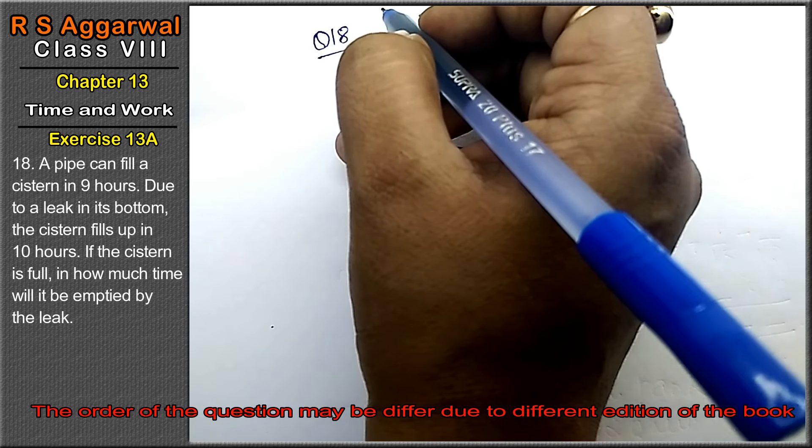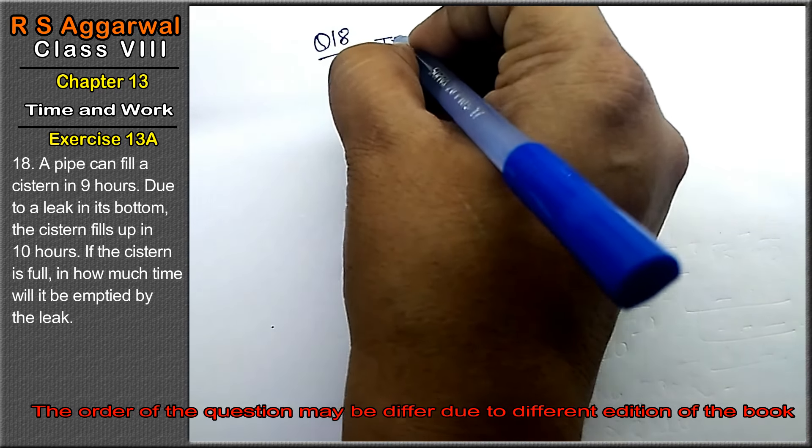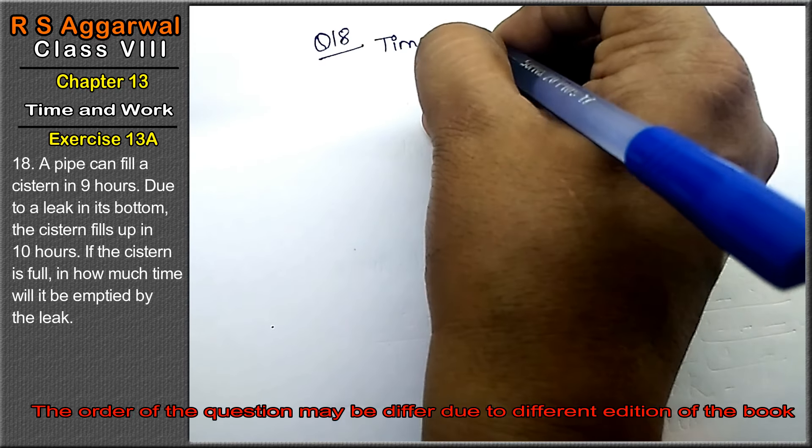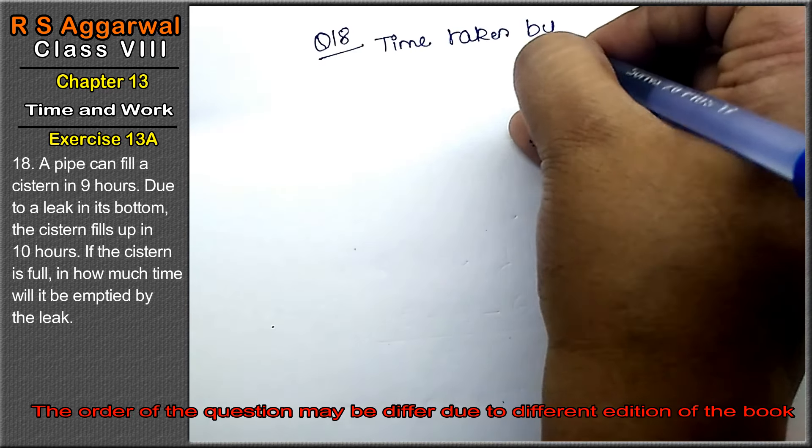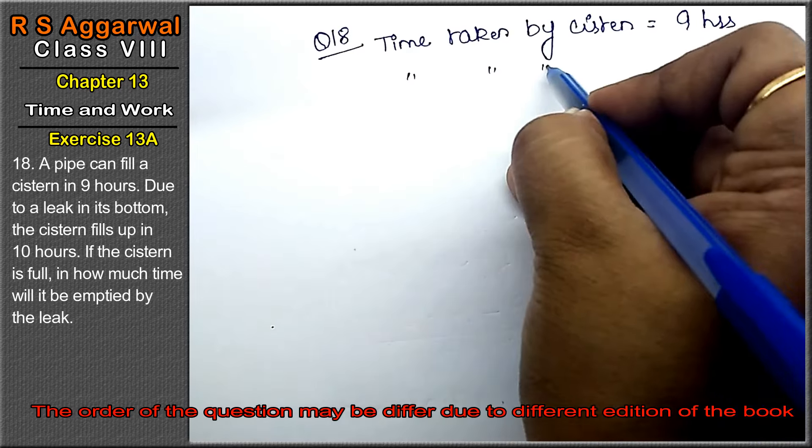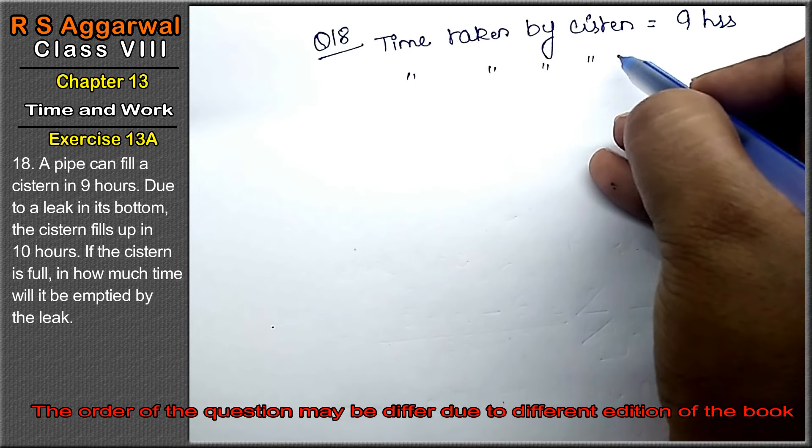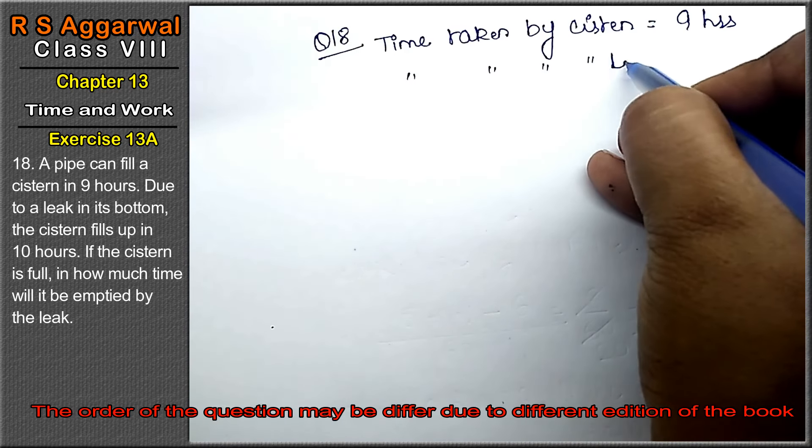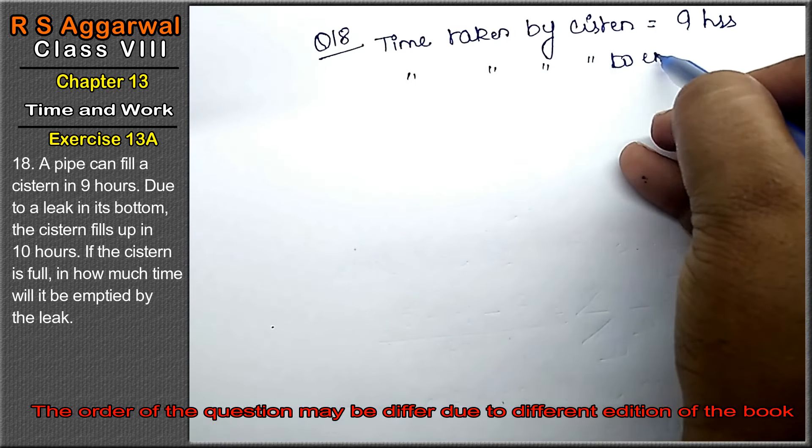Friends, time taken by cistern to fill is 9 hours, right? But time taken by cistern to fill due to leak - because of the leak, the time taken is 10 hours, right?